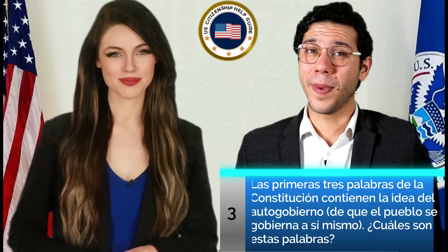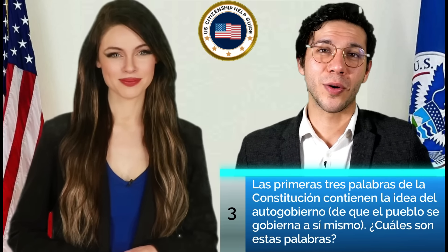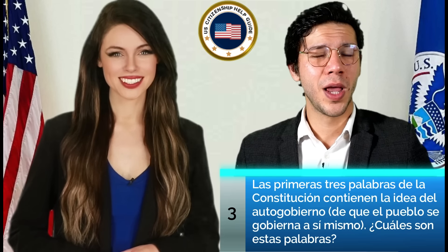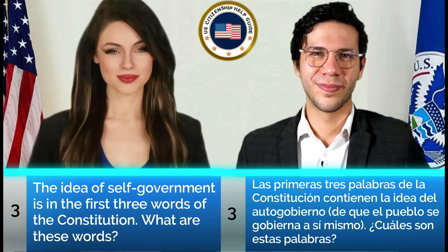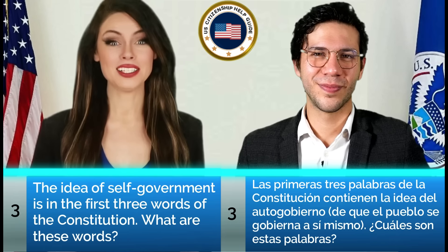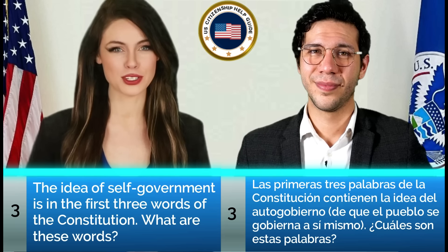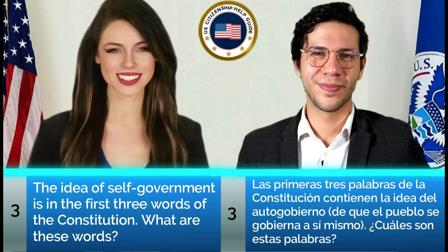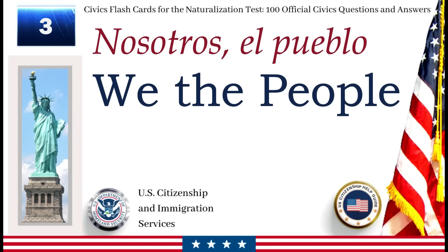Las primeras tres palabras de la Constitución contienen la idea del autogobierno, de que el pueblo se gobierna a sí mismo. ¿Cuáles son estas palabras? The idea of self-government is in the first three words of the Constitution. What are these words? Nosotros, el pueblo. We the people.